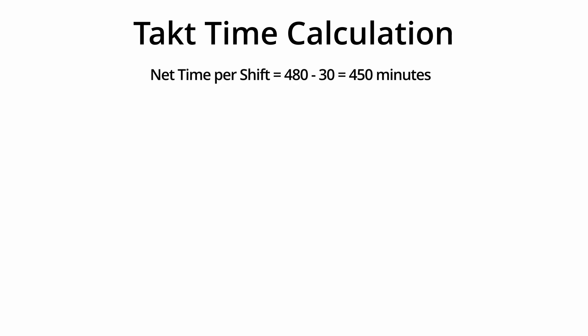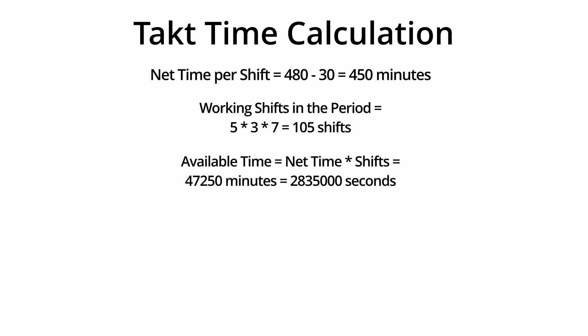Net time per shift equals 480 minus 30 equals 450 minutes. Working shifts in the period equals 5 by 3 by 7 equals 105 shifts. Available time equals net time by shifts equals 47,250 minutes, which equals 2,835,000 seconds.